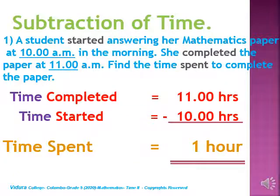Now we are going to do subtraction of time. Let's read the question: A student started answering her mathematics paper at 10 a.m. in the morning. She completed the paper at 11 a.m. Find the time spent to complete the paper. I have underlined the time given here — 10 a.m. and 11 a.m. The words time started, completed, and spent are very important in this question.